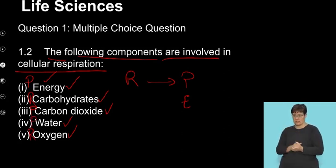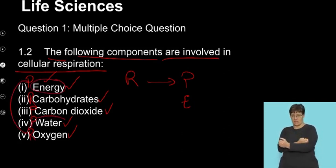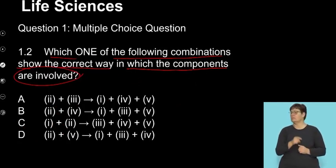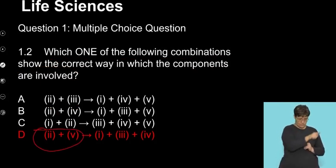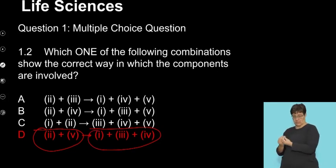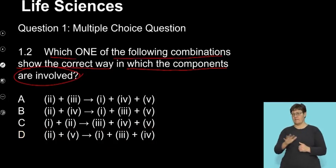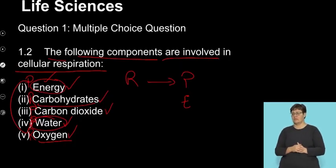We've got products, which are energy and water. And we've got reactants, which are carbohydrates and your oxygen. So when we unpack this question, it's important that you look at that. So it's going to be those two reactants forming those three products. And as I mentioned, if we go back, it's two and five. So two and five, let me just go back one more slide.